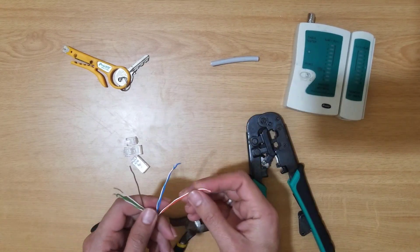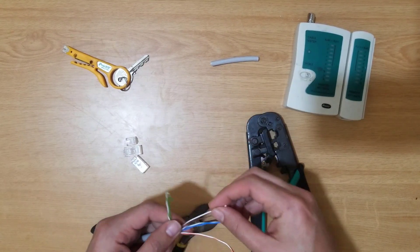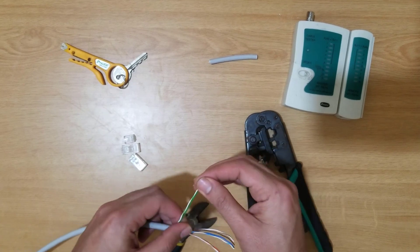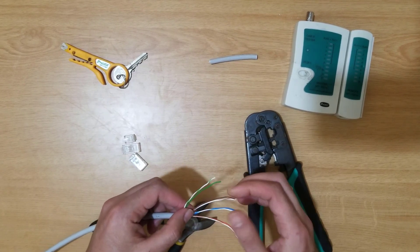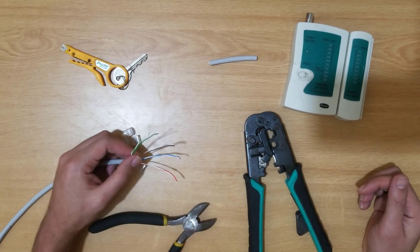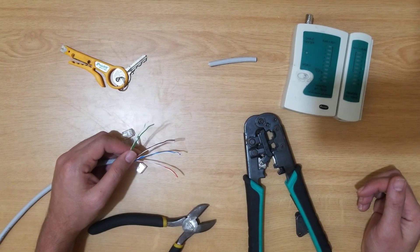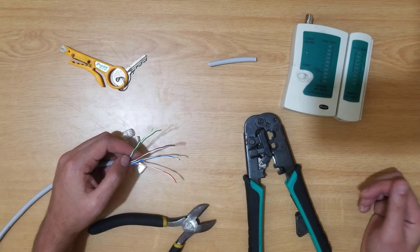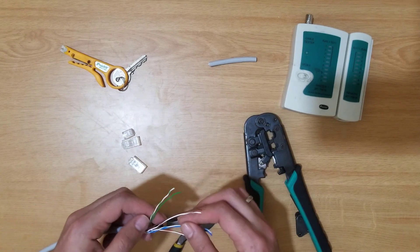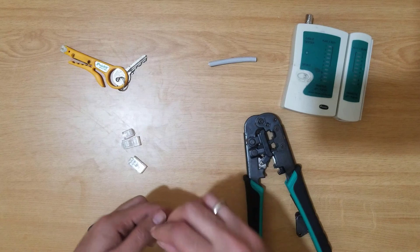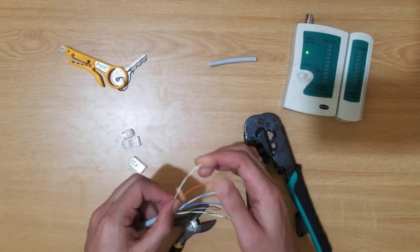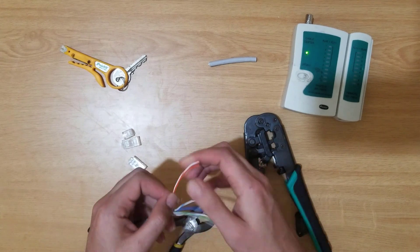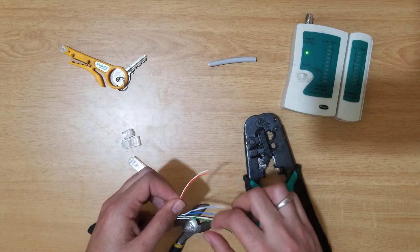Now, there are two types of color coding to make Cat 6 connectors: standard A and B. Almost always we are using B. For standard B, the color coding starts with white-orange, orange. So the orange pair I'm taking here first: white-orange, then orange cable, then white-green, blue.